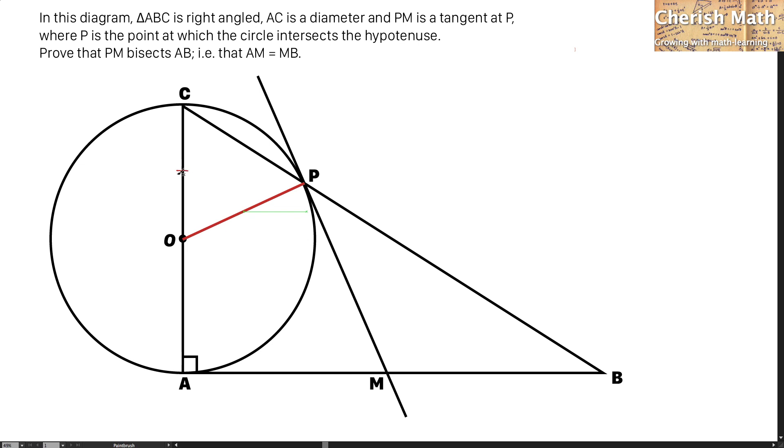That means OC and OP are the same length, which is their radius. Let me label this part as angle A, and this part will be the same because this is an isosceles triangle.